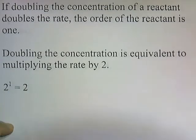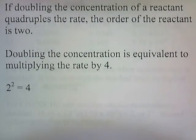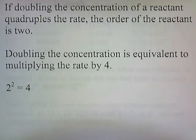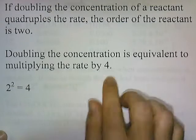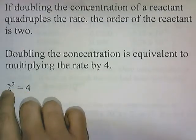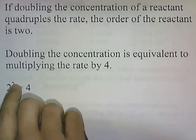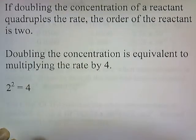One more concept. If doubling the concentration of a reactant quadruples the rate, the order of the reactant is 2. By doubling the concentration, it's equivalent to multiplying the rate by 4. Since 4 is the same as 2 squared, that's why it's second order for the reactant.